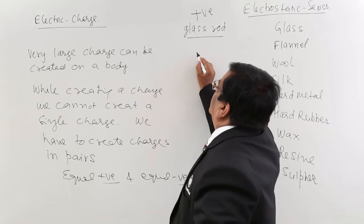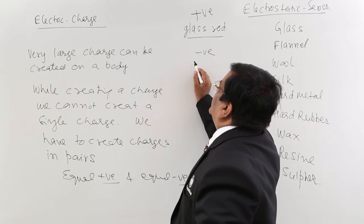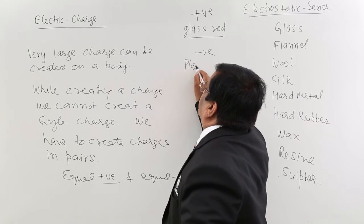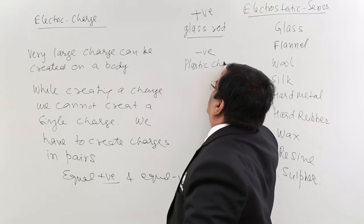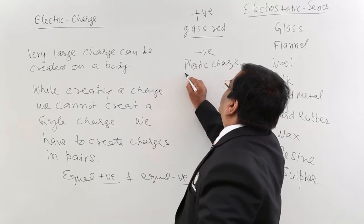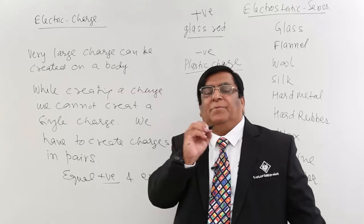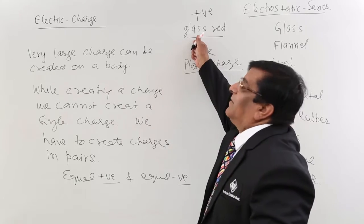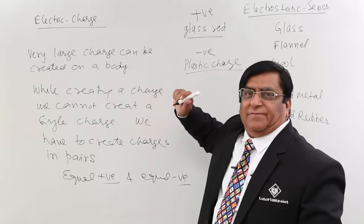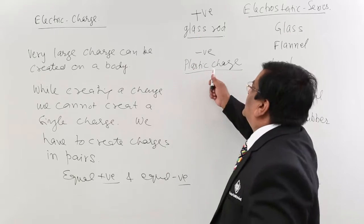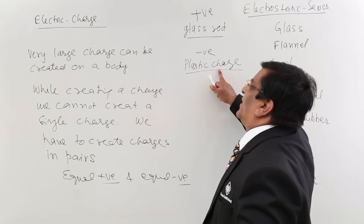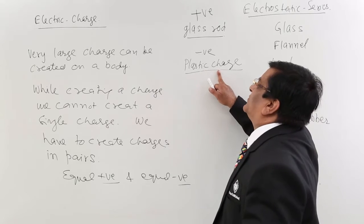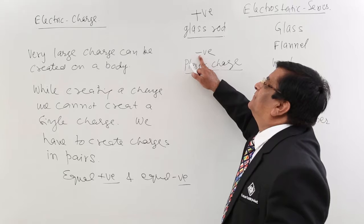Similarly, negative charge is represented by a charge when a plastic rod is rubbed. What about the other things? He rubbed many things. Anything which is repelling glass is positive and anything which is attracting plastic charge is positive. Anything which is repelling plastic charge is negative.